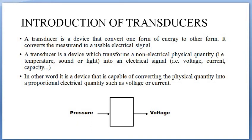For example, pressure is the measurement input, and it is being converted into an electrical signal such as voltage — and that conversion is done by the transducer. This is just a representation: pressure is the input and it is being converted into a voltage as the electrical output.